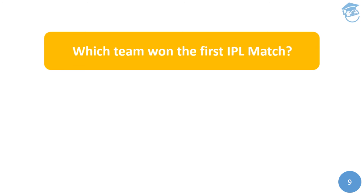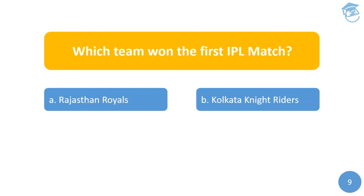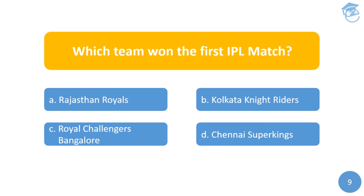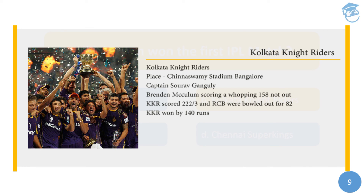The ninth question: which team won the first IPL match? Options are: A) Rajasthan Royals, B) Kolkata Knight Riders, C) Royal Challengers Bangalore, or D) Chennai Super Kings. The answer is Kolkata Knight Riders. The first IPL match was played between Kolkata Knight Riders and Royal Challengers Bangalore at the Chinnaswamy Stadium, Bangalore. KKR was captained by Sourav Ganguly, and the match saw a spectacular performance from Brendan McCullum scoring 158 not out. KKR scored 222 for 3 wickets while RCB were bowled out for merely 82 runs, so Kolkata won by 140 runs.